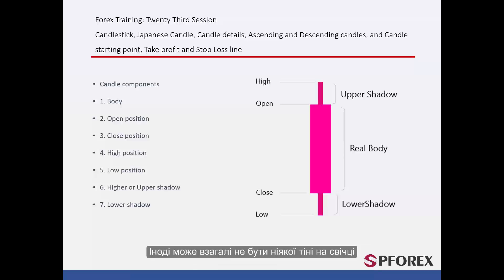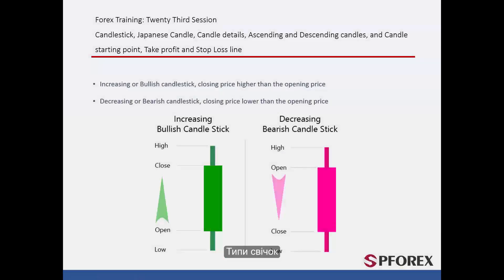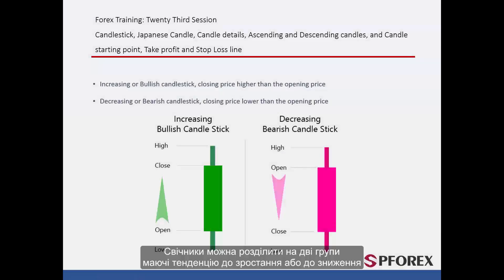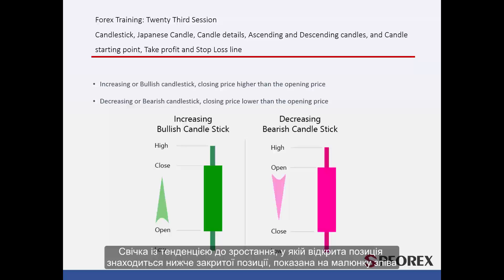There would be no shadow on some candles. Candlesticks can be categorized into two types: increasing or bullish, and decreasing or bearish. In an increasing or bullish candlestick, the open position is located below the closed position, as illustrated in the left figure. Price starts from the open position.